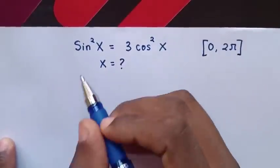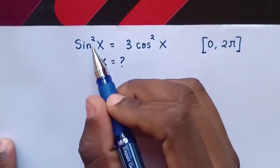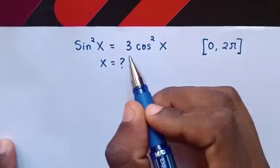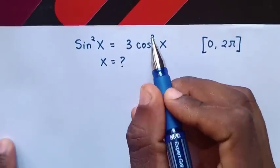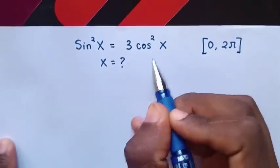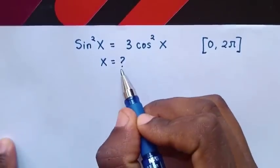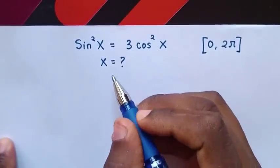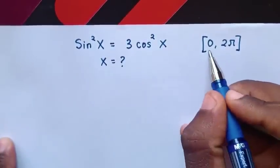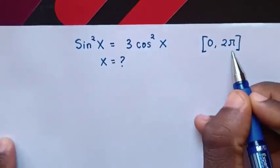Hello! How to solve sin squared x equals 3 cos squared x to find the value of x, such that x is from 0 to 2 pi.